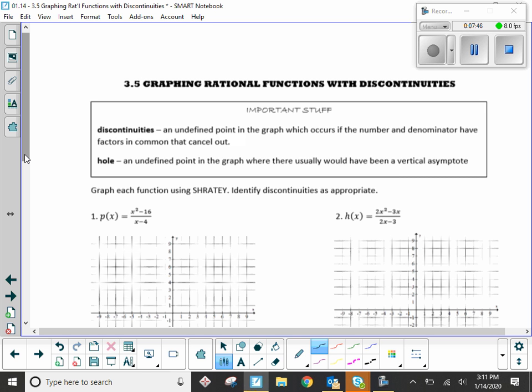The H stands for hole, which is an undefined point in the graph where there usually would have been a vertical asymptote. Which part of the rational function equation do we get vertical asymptote information from? The bottom. So the bottom can never equal zero. And so when no factors cancel, which is everything we've done so far, the bottom gave you a vertical asymptote. Today a factor will cancel. And in that case, what the bottom gives you is just a hole in the graph, a point that will be undefined.